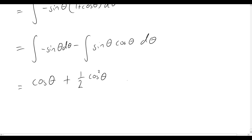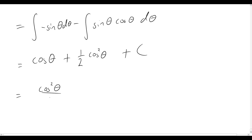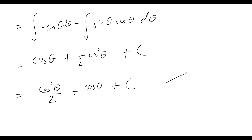The last thing we need to do is add the constant of integration plus C. So our final answer is cos squared theta over 2 plus cos theta plus C. Essentially, you end up with a quadratic in cos theta.